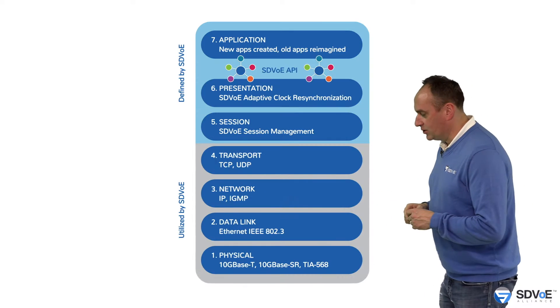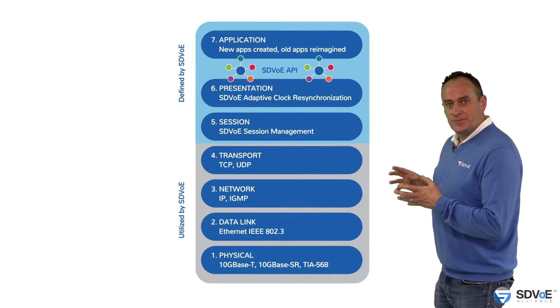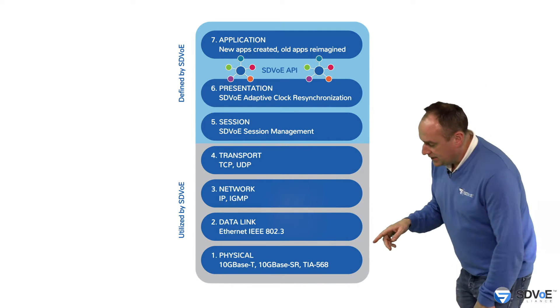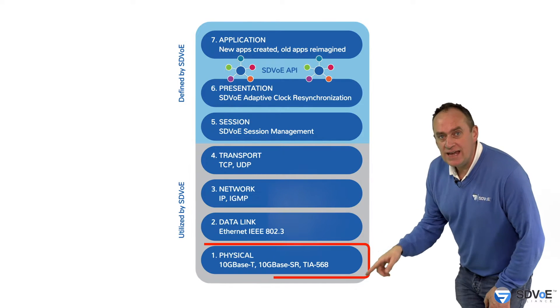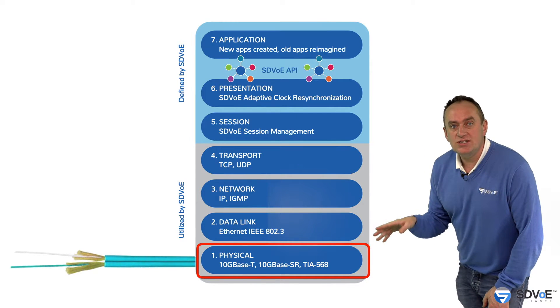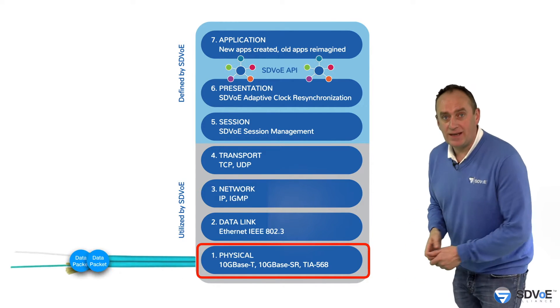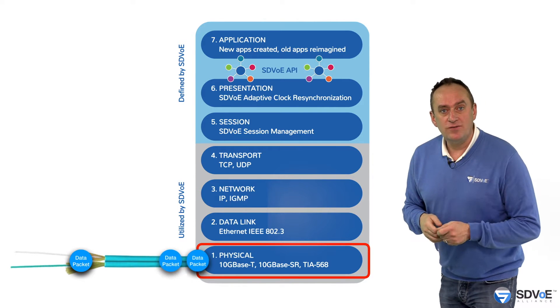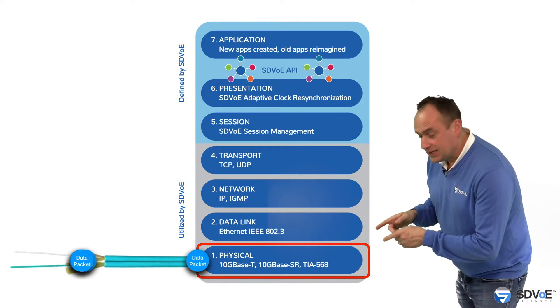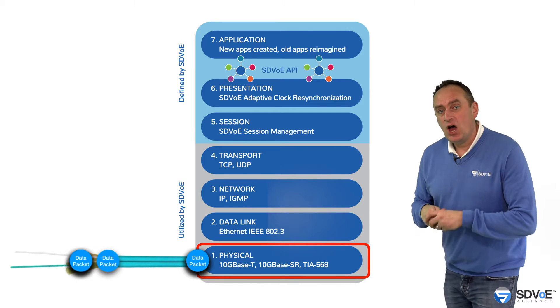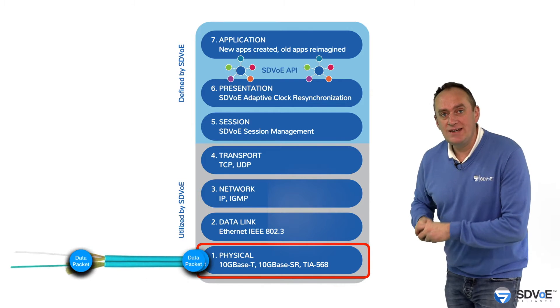To begin with, let's pull up our old friend the OSI model. As we learned from the OSI course, the physical layer is the medium we use to send and receive data packets. We can think of the physical layer as the cable or Wi-Fi which connects hosts to a network.